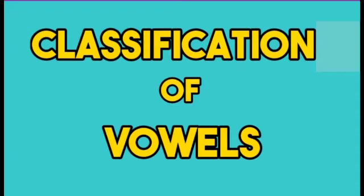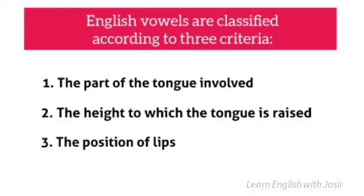So, the classification of vowels: English vowels are classified according to three criteria, just as consonants are. The first one is the part of the tongue involved, the second is the height to which the tongue is raised, and the third is the position of the lips.